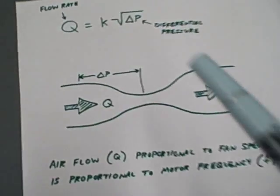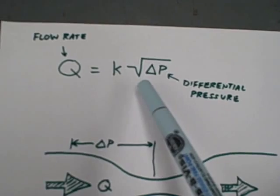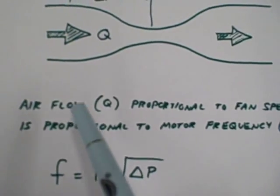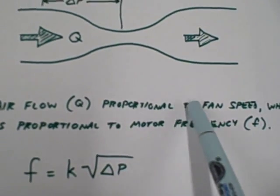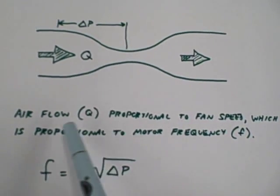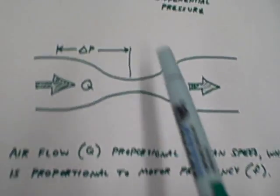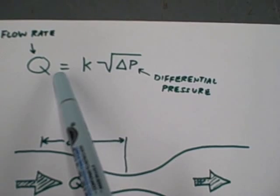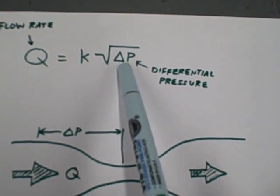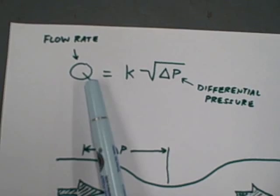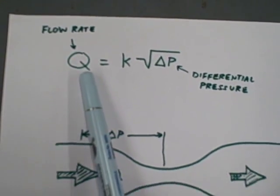As we see from the equation here, Q is equal to K times the square root of delta P. Air flow, Q, is proportional to the fan speed, which is proportional to motor frequency. We see here air flow is equal to K times the square root of differential pressure, and that air flow is typically measured in cubic feet per minute or some other volumetric unit.